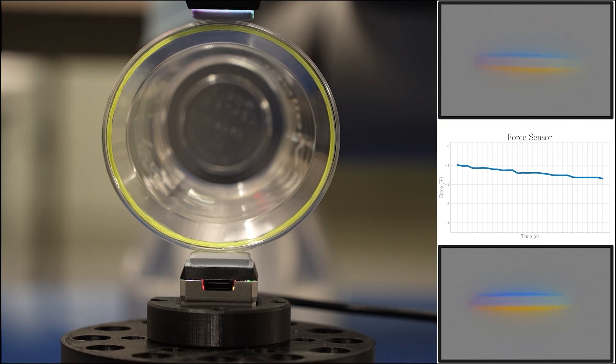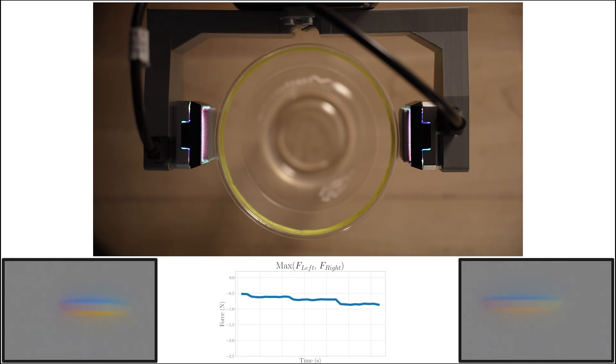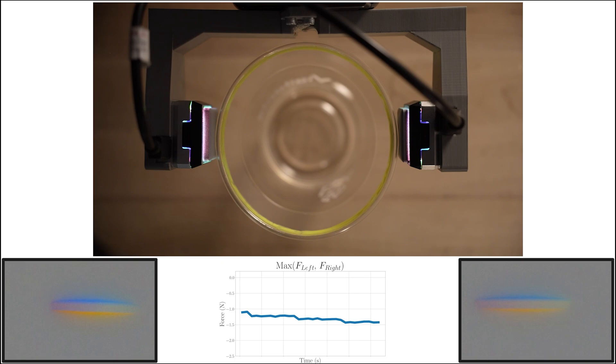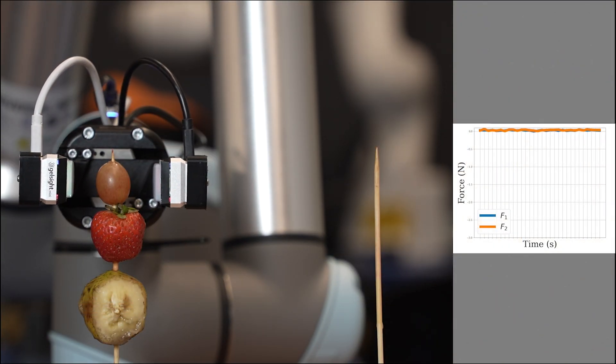We then replicated this force using a gripper with two GelSight Mini sensors pushing the rim in the same way. The similar deformation observed in the gripper test confirms the accuracy of our model for grasping tasks.